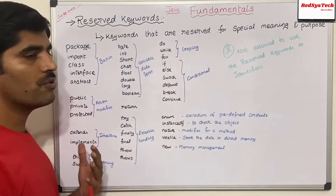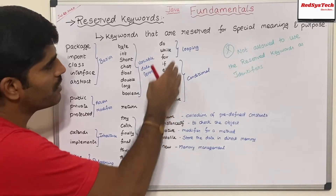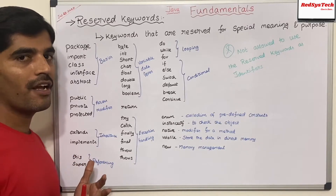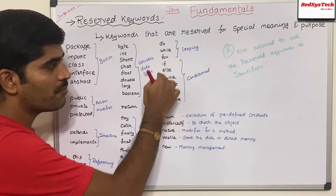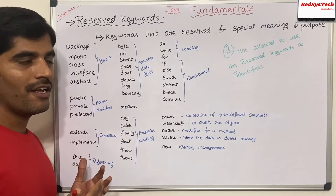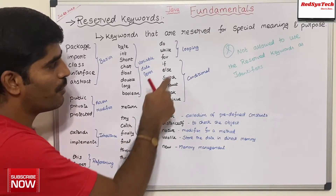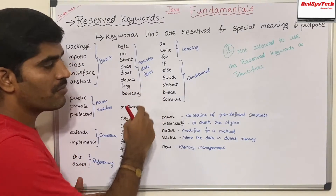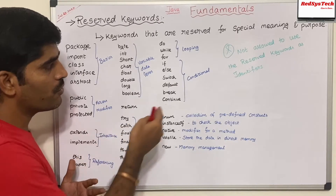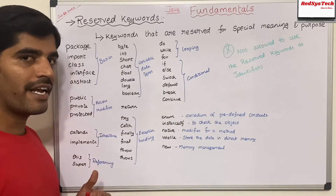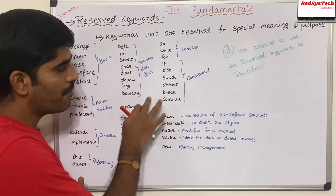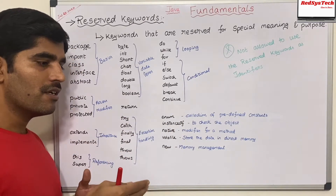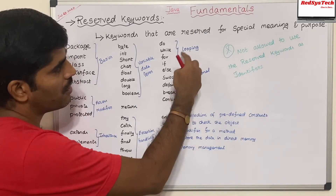For iterating data, looping, and checking conditions, we have looping and conditional keywords. 'do', 'while', 'for' are looping statements used to iterate through data and perform some action. For conditional checks: 'if', 'else', 'switch', 'default', 'break', 'continue'. Switch handles multiple conditional cases. Default executes if none of the cases match. Break exits the current loop, and continue exits the current iteration and moves to the next one.